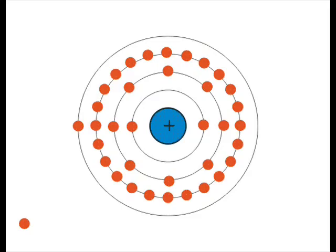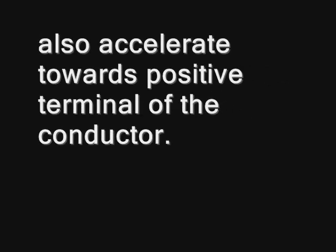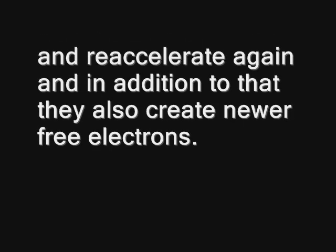During this journey, free electrons collide with other atoms of the metal and create more free electrons. Due to the same electric field, these newly created free electrons also accelerate towards the positive terminal of the conductor. But they also collide with other atoms, bounce back in random manner and re-accelerate again, and in addition to that, they also create new free electrons.